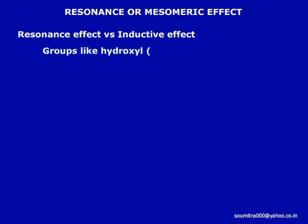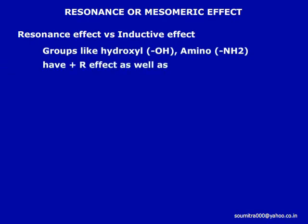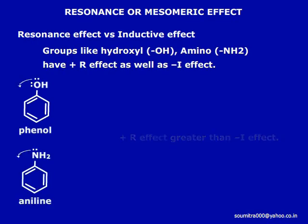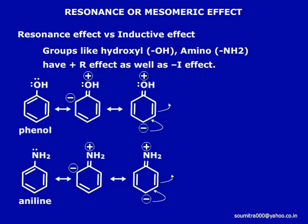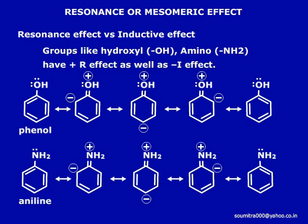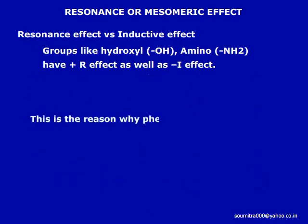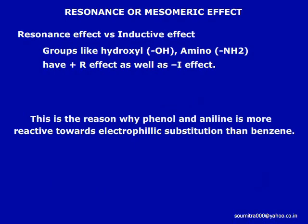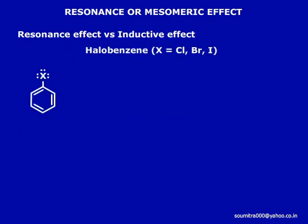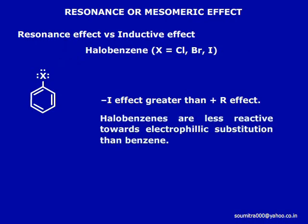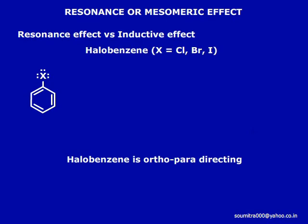Resonance effect versus inductive effect. Groups like hydroxyl and amino have a plus R effect as well as a minus I effect. But in phenol and aniline, the plus R effect outweighs the minus I effect. This is the reason why phenol and aniline are more reactive towards electrophilic substitution than benzene. However, in the case of halo groups, the inductive effect is stronger and halobenzenes are less reactive towards electrophilic substitution than benzene. However, halobenzenes are ortho/para directing due to the plus R effect.